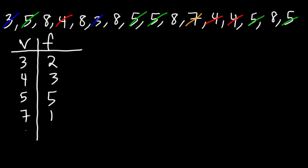Next is an 8, and I can see 1, 2, 3, 4, 5 eights. So that's a very simple way to make a frequency table.